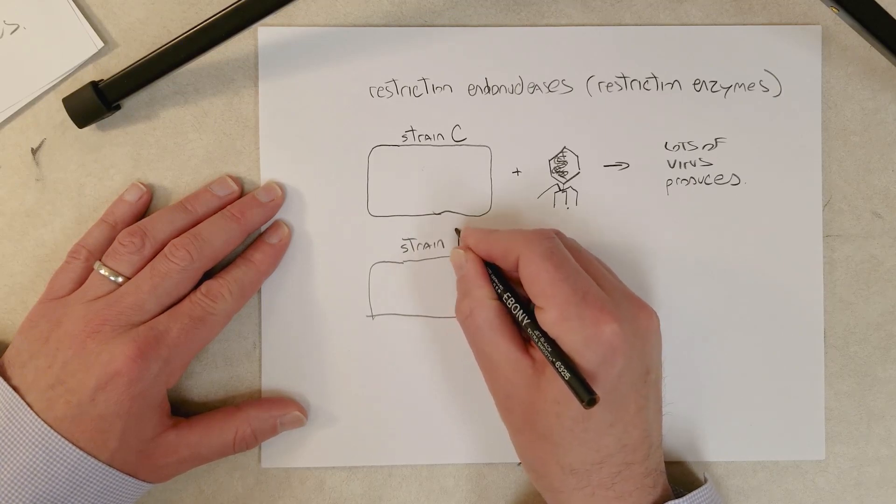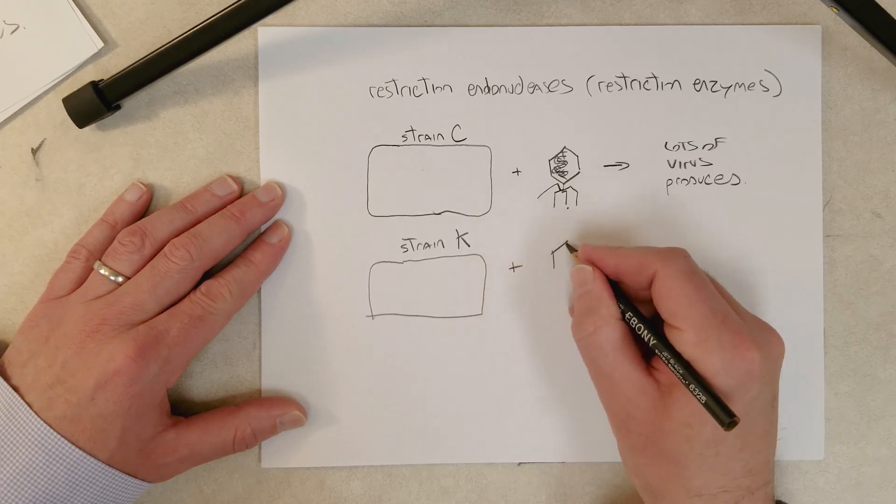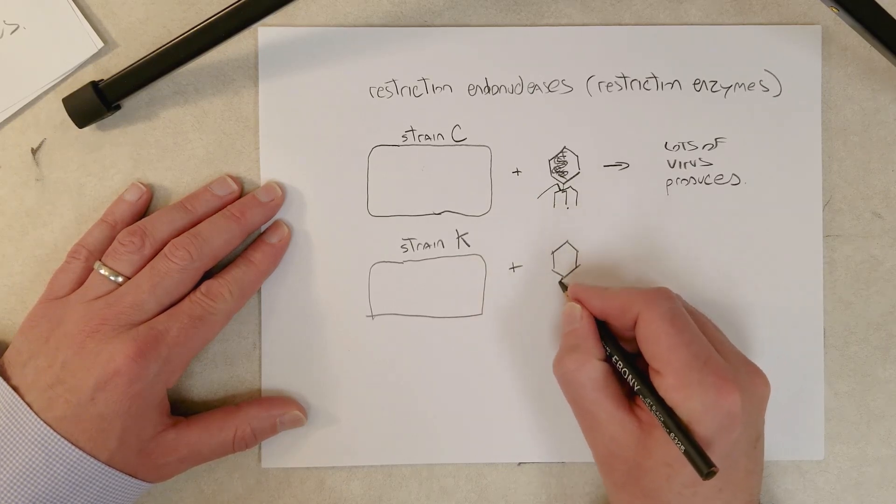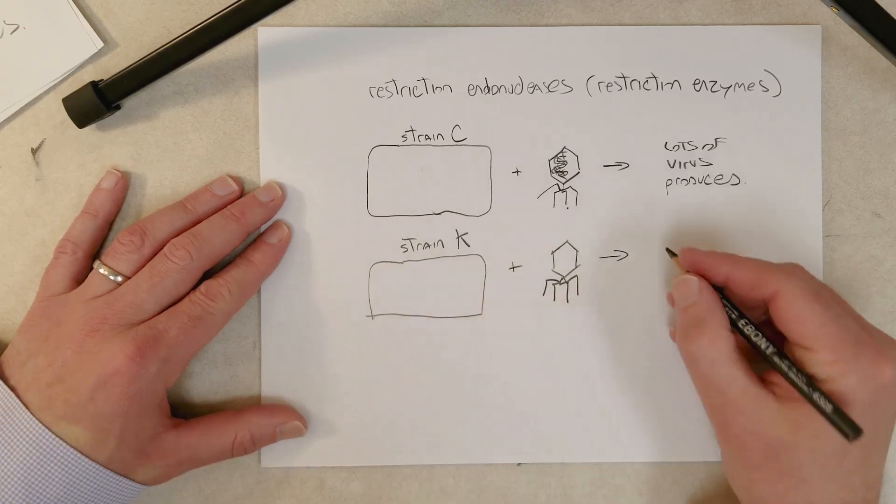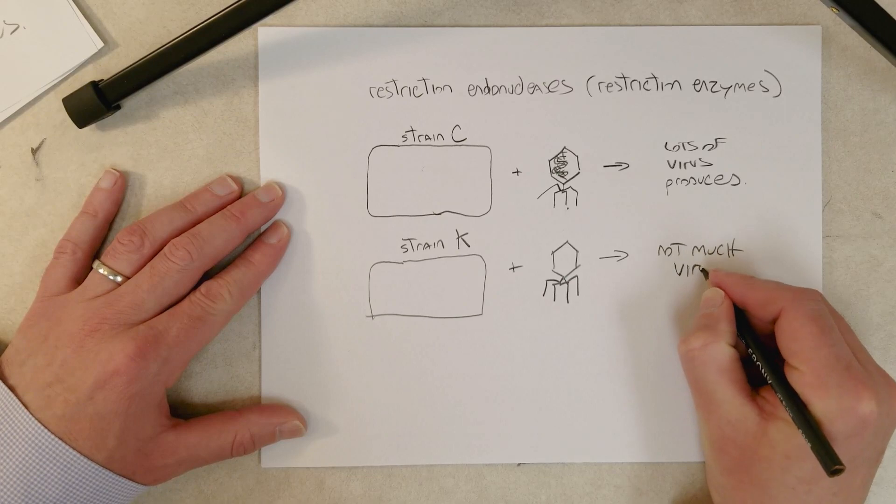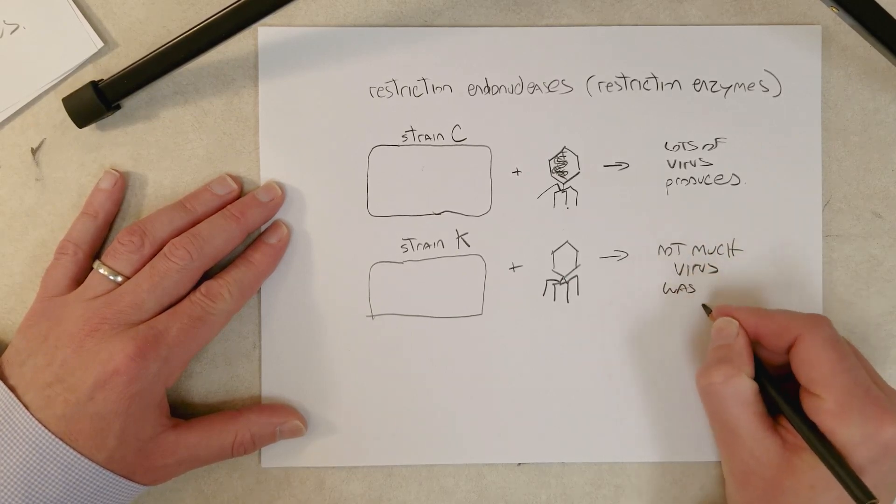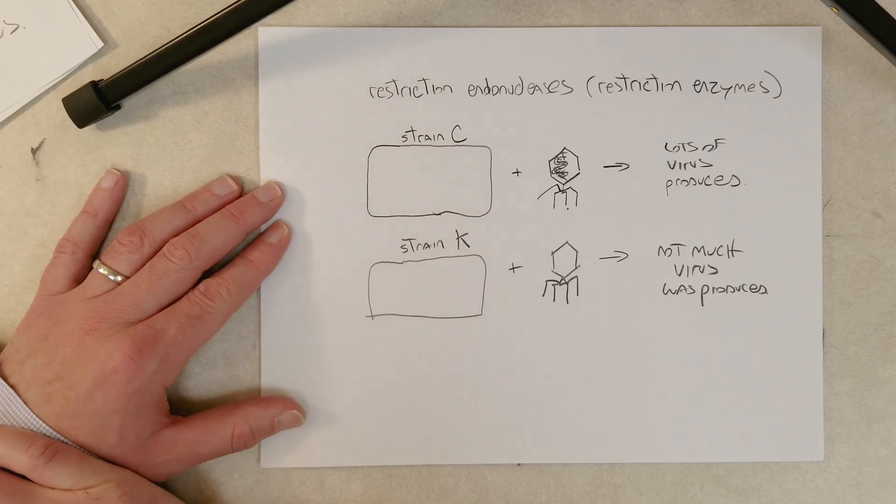Strain K plus the virus, same virus called bacteriophage. Viruses that infect bacteria are called bacteriophages. Not much virus was produced, suggesting that it couldn't really infect strain K.